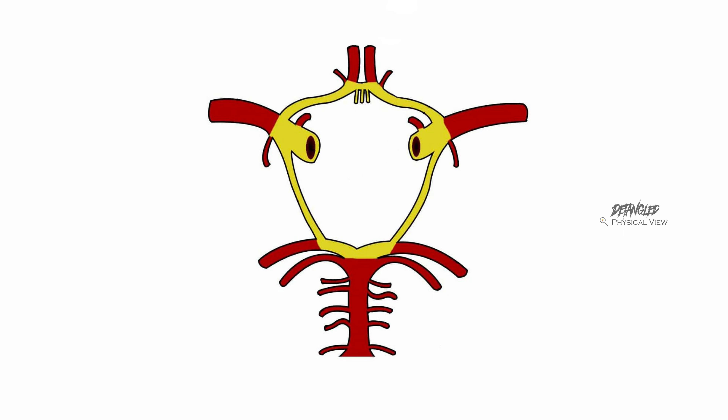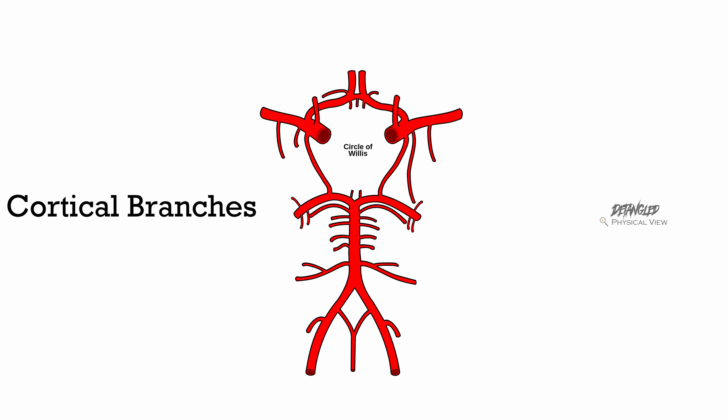From the Circle of Willis, there are three types of branches: cortical, central, and choroidal. Cortical branches include three cerebral arteries: the anterior cerebral artery, the middle cerebral artery, and the posterior cerebral artery.